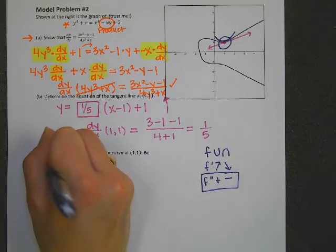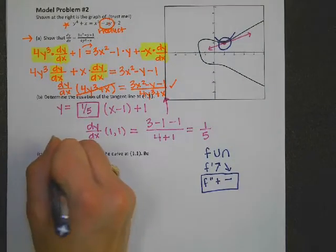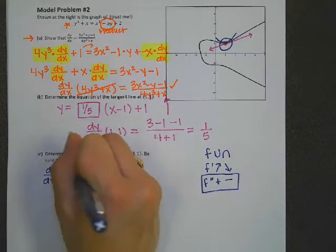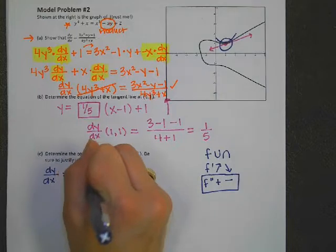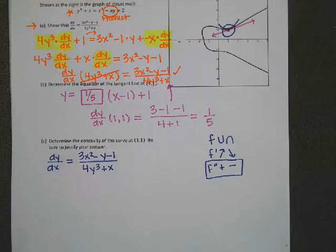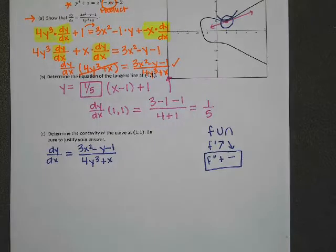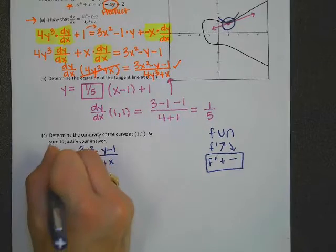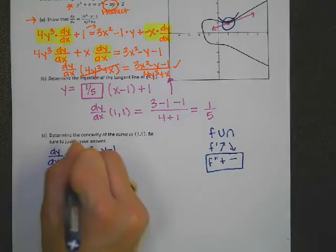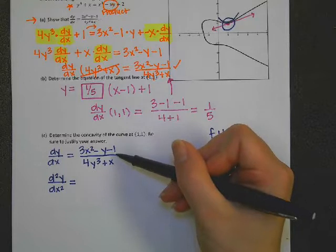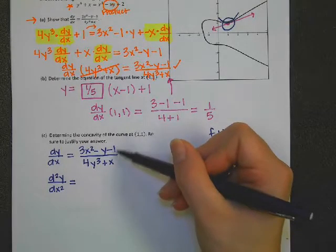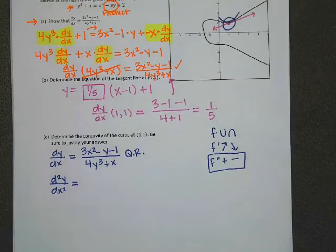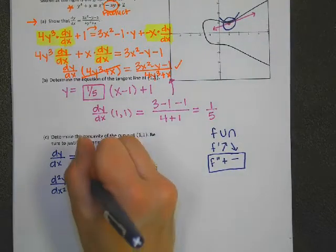So if I have my first derivative, just copying this down from part A, I now need to find the derivative of this derivative. So that would be the second derivative. Since I have two functions here, or two curves really, I would need to use the quotient rule to find the second derivative. So that's going to be low